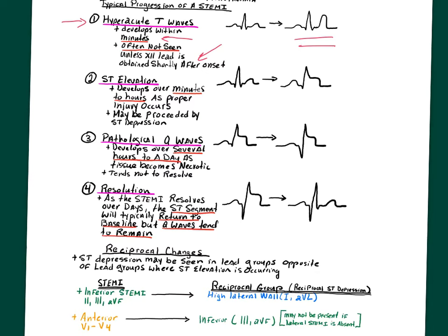When you see hyperacute T waves in someone with new onset signs and symptoms suggesting STEMI, keep that in mind — this could very well develop into a STEMI. That's why when you suspect acute coronary syndrome, you should be doing serial 12-leads every five to ten minutes, because this very well could progress into a STEMI.